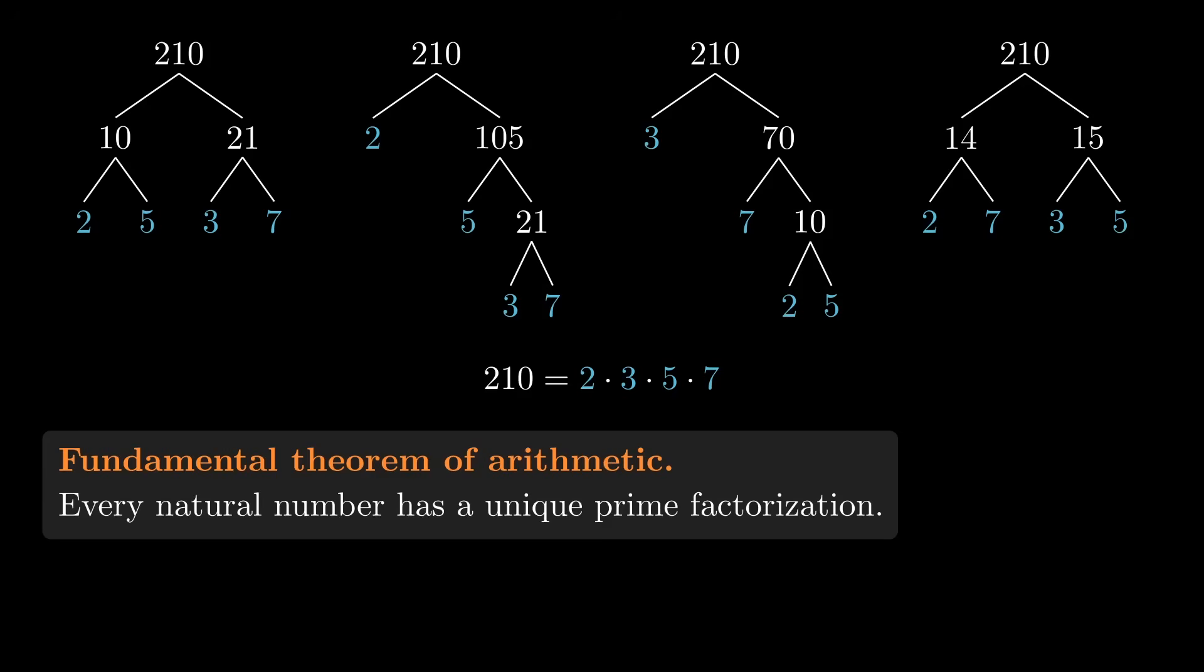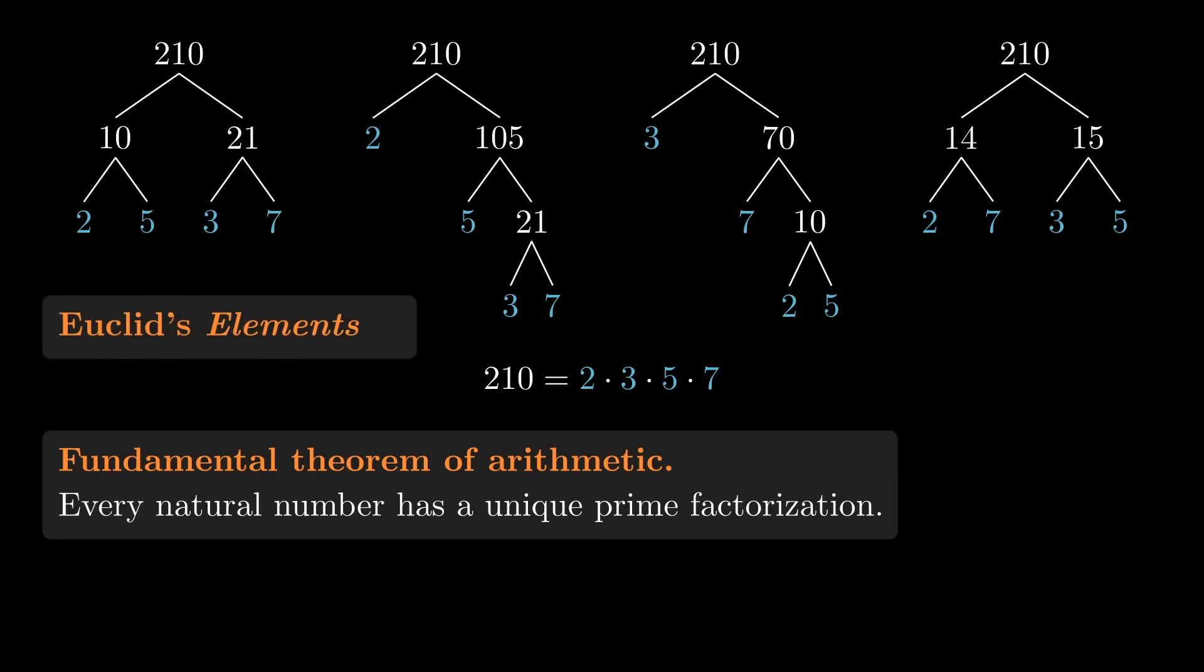This was the first algorithm to be described, more than 2,000 years before there was any modern computer to run it on. It appears in Euclid's elements, and today we call it the Euclidean algorithm.